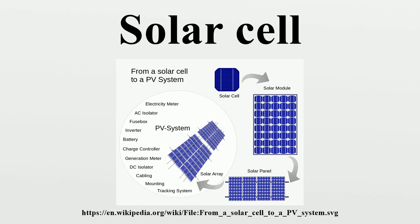The first practical photovoltaic cell was publicly demonstrated on 25 April 1954 at Bell Laboratories. The inventors were Daryl Chapin, Calvin Souther Fuller and Gerald Pearson. Solar cells gained prominence with their incorporation onto the 1958 Vanguard I satellite. Improvements were gradual over the next two decades. However, this success was also the reason that costs remained high, because space users were willing to pay for the best possible cells, leaving no reason to invest in lower cost, less efficient solutions.